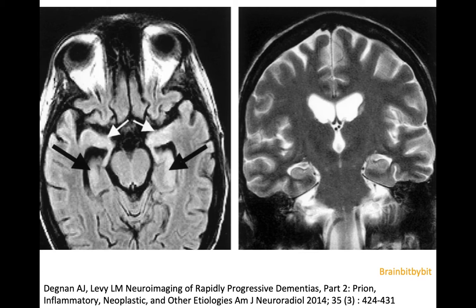Limbic encephalitis can also be paraneoplastic, as in this case of a 26-year-old with leukemia, with hyperintensity of the amygdala and hippocampi. You can already notice that on the coronal T2 images the abnormality is very difficult to detect, or not even visible.